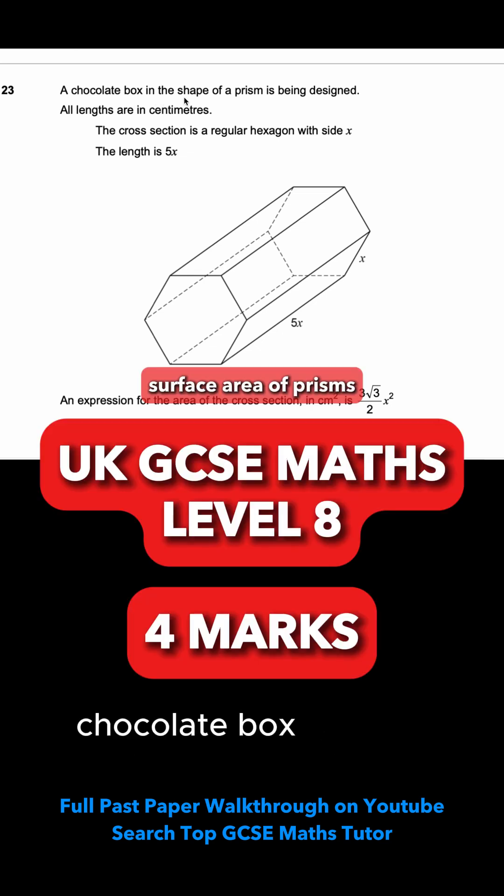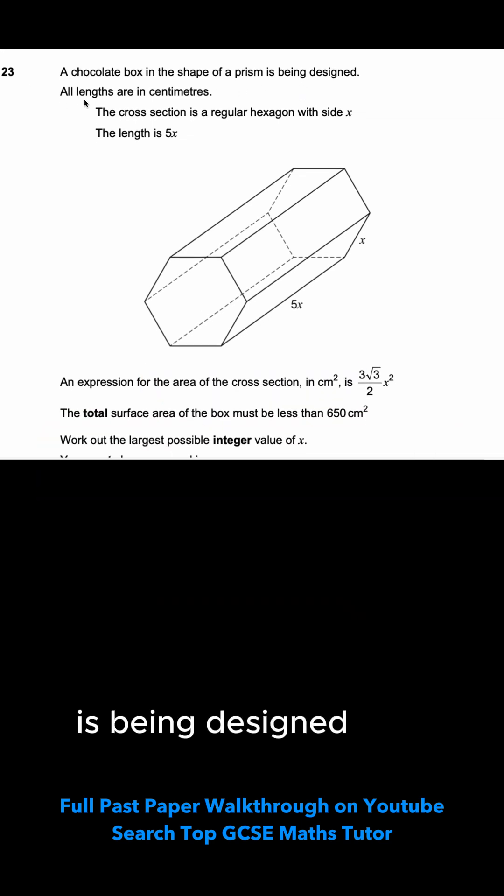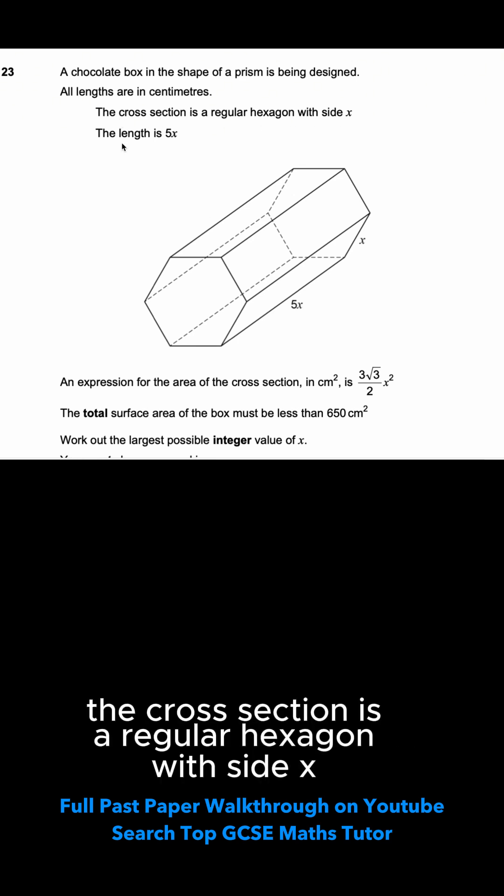Question 23. A chocolate box in the shape of a prism is being designed. All lengths are in centimeters. The cross-section is a regular hexagon with side x, and the length is 5x.